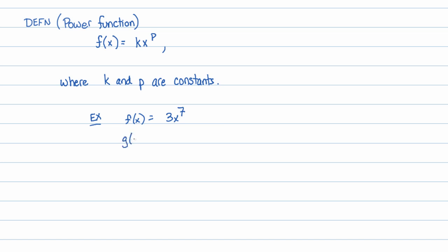Something interesting might be 1.1x^(-3). That's a power function because, again, both the coefficient and the power are constants. And oddly enough, something like negative 11x^(1.8) — we haven't seen this kind of exponent yet, so don't worry about it — is also considered a power function because the exponent and the coefficient are both constant.